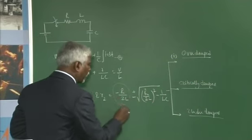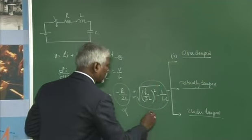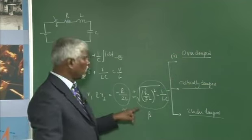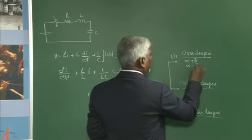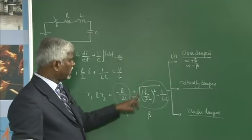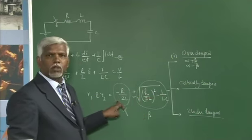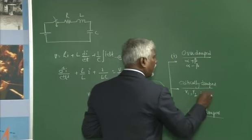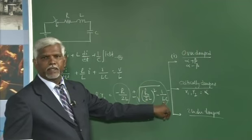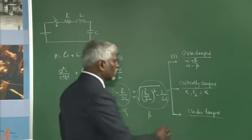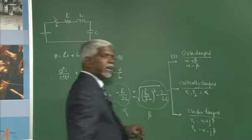Defining α = R/(2L) and β = √[(R/2L)² - 1/(LC)]: for over-damped, we get two real unequal roots α+β and α-β. For critically damped, both roots are repeated at α. For under-damped, roots are complex conjugates: α + jβ and α - jβ.